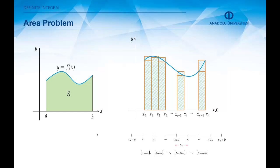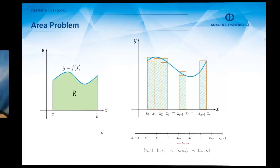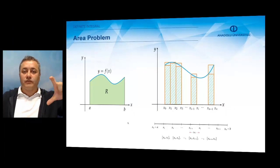Now we have n subintervals, as you may see on the figure on the right-hand side. We are going to construct rectangles — each rectangle will have base Δxᵢ. All these rectangles are going to have heights, and these heights will be chosen depending on the value of the point we choose from each subinterval. We want the minimum value and maximum value of the function to construct these rectangles, so the height of each rectangle will be the minimum or maximum value of the function for each subinterval.